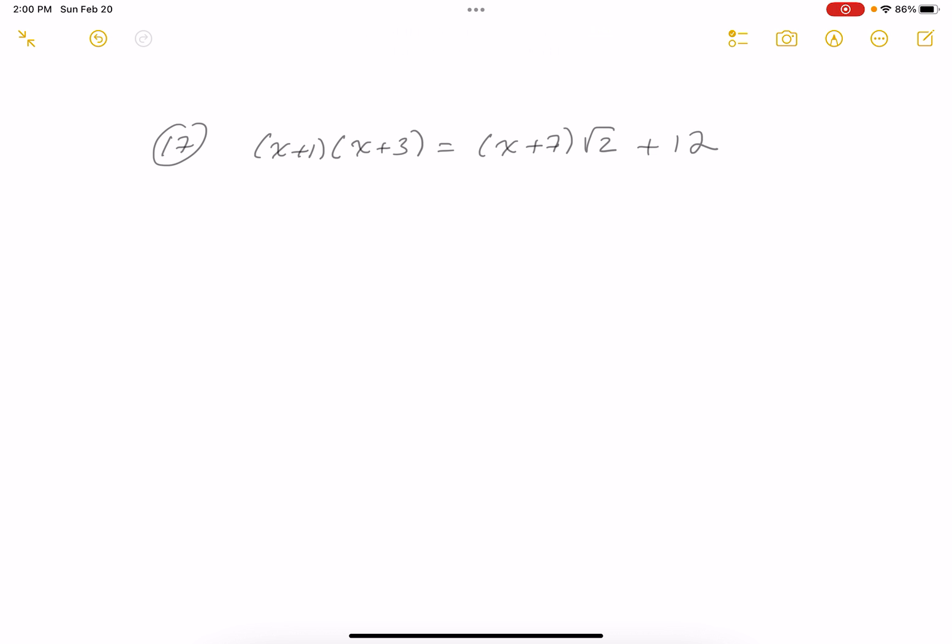The consistency is as follows. I would definitely simplify both sides. And what do you get? X squared plus 4X plus 3. And then I get root 2X, and then I get 7 root 2 plus 12.